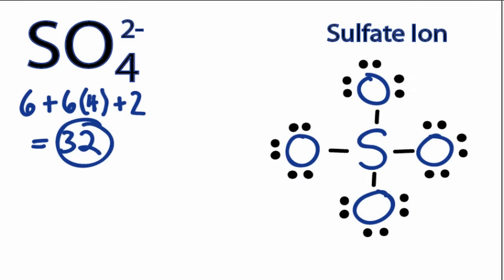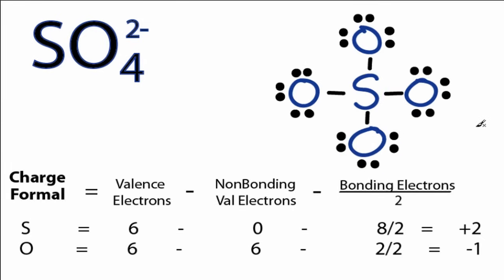But we're not quite done yet. Sulfur is in the third period of the periodic table. That means it can hold more than 8 valence electrons, so we really do need to check our formal charges. To calculate the formal charge on the sulfur, we see that sulfur on the periodic table, Group 16 or 6, has 6 valence electrons. All of the electrons are involved in bonds, so that's going to be 0. And the bonding electrons — we've used 8 of those — we divide by 2. 6 minus 0 minus 4 gives us a plus 2 formal charge for the sulfur.